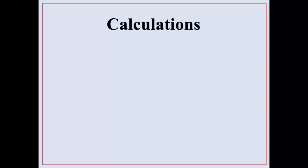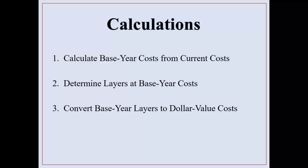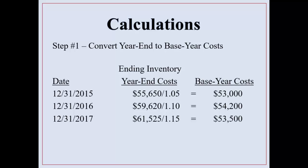That's all dollar value LIFO is doing. Step one: calculate base year cost from current cost. Step two: determine layers at base year cost. Step three: convert base year layers to dollar value cost. For step one, take the ending year $55,650 and divide by the cost index. You're converting the end-year dollar value to be comparable with the January 1 dollar value — stripping away the effects of inflation so you can do a comparison. You'll either be given the cost index or enough information to calculate it.